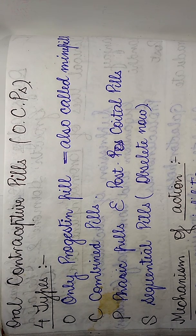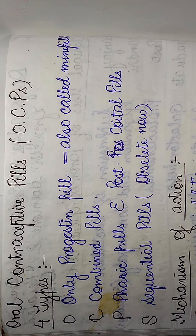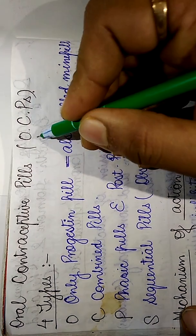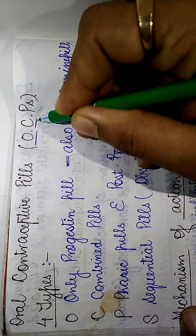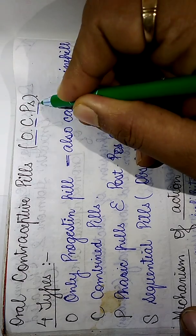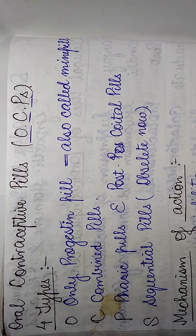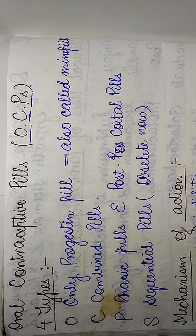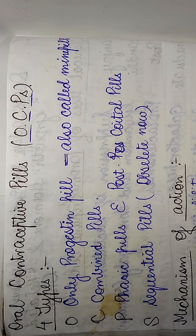The classes of drugs which can be used — I have made a mnemonic for the oral contraceptive pills in the form of OCPs. Just by remembering the mnemonic of OCPs, we can easily remember the classes of drugs which can be used for oral contraception.